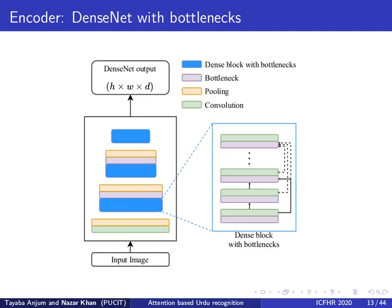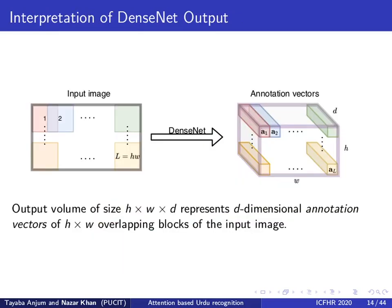The output volume of size h by w by d represents d-dimensional encodings, also known as annotation vectors, of h×w overlapping blocks of the input image. The correspondence between the annotation vectors and image regions exists because convolution represents moving, overlapping, and localized dot products, and pooling results in effectively larger receptive fields. Therefore, each depth vector in the output volume corresponds to a d-dimensional encoding of some localized image region.